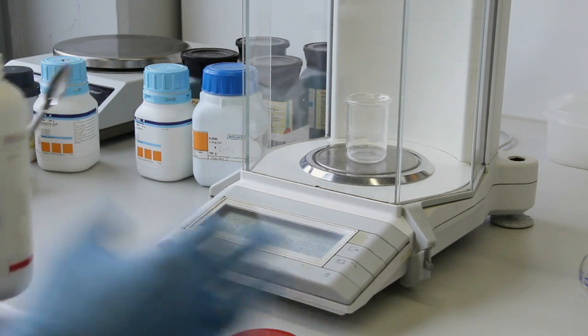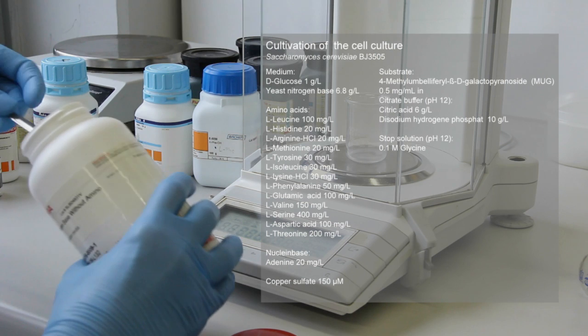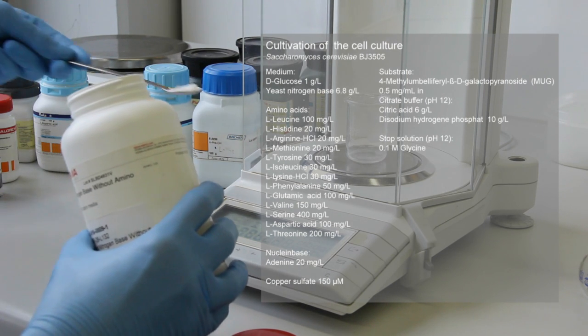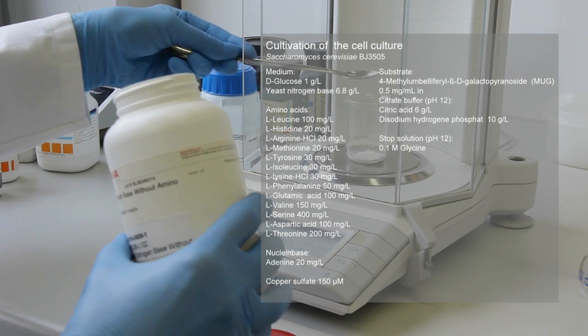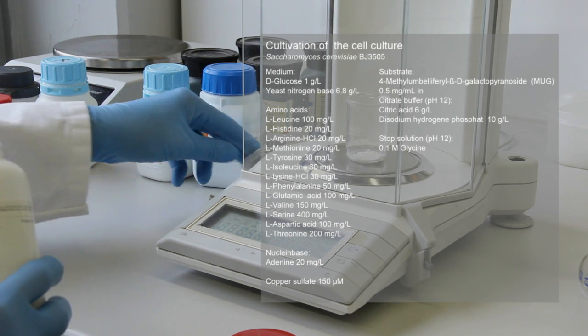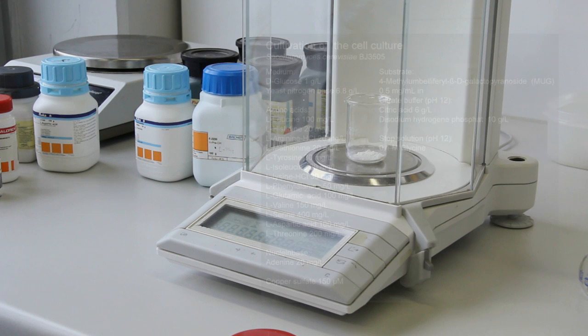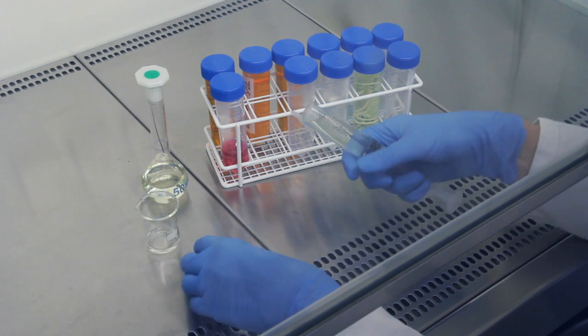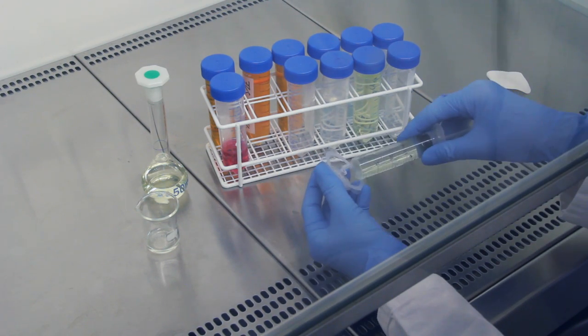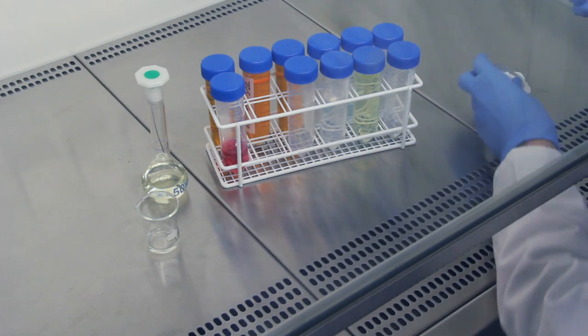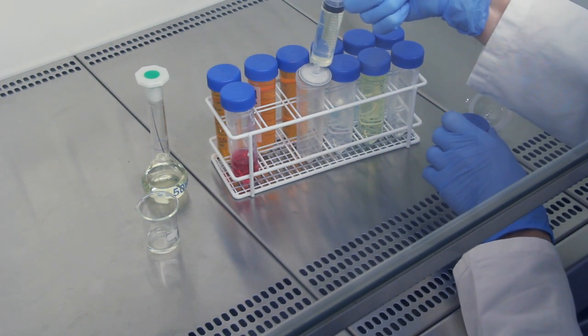The medium for the yeast cells consisted of glucose, yeast nitrogen base and certain amino acids, a nucleon base and copper sulfate, which were weighed, mixed and dissolved in bi-distilled water. The dissolved compounds were autoclaved at 120 degrees for 30 seconds, except for the heat-labile amino acids, which were added in a clean bench via sterile filtration with a filter of a pore size of 0.22 micrometer.